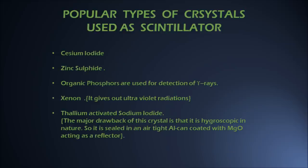Cesium iodide crystal is used for detection of gamma rays. Zinc sulfide is used for detection of heavy particles. Organic phosphorus also detects gamma rays. Xenon is used for detection of heavy particles, and it is also to be noted that xenon gives ultraviolet radiations, not visible light.